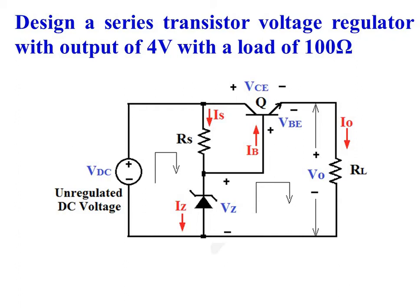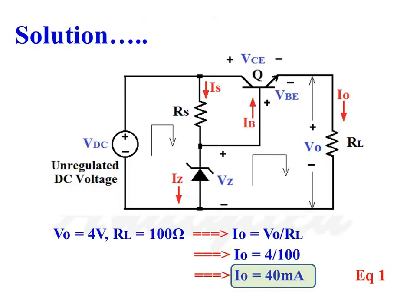The current through the series resistance is IS, the current through the Zener diode is IZ, the current into the base of the transistor is IB, and the output current is I0. Given output voltage V0 equals 4V and load resistance RL equals 100 Ohms, the output current I0 equals V0 divided by RL, which equals 40mA.